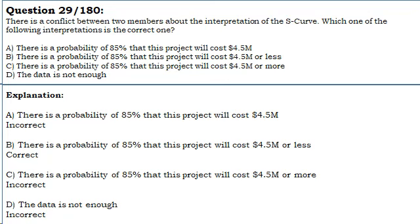Option C: There is a probability of 85% that this project will cost $4.5 million or more. Incorrect.